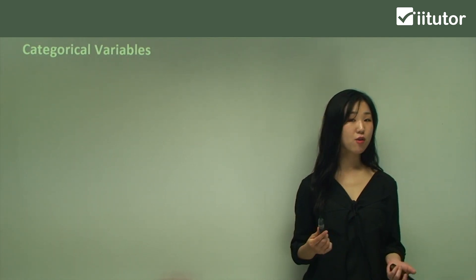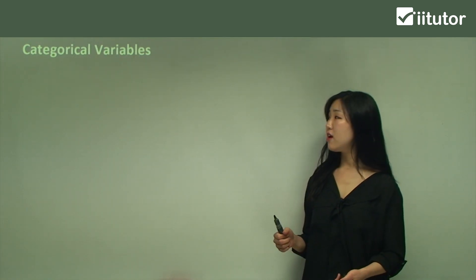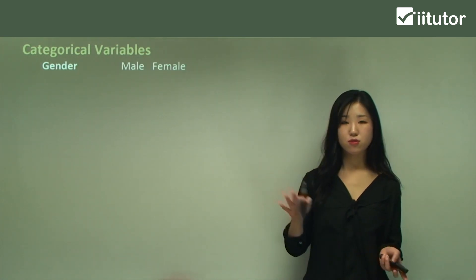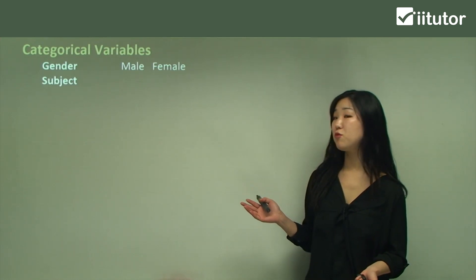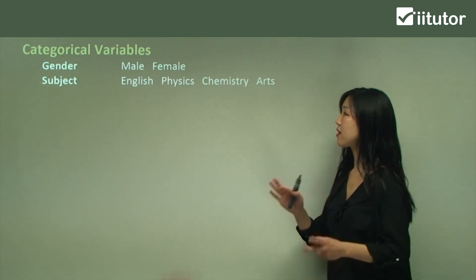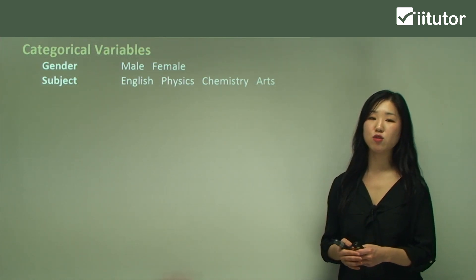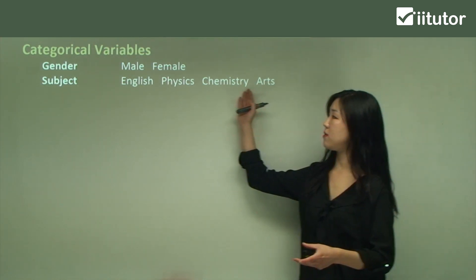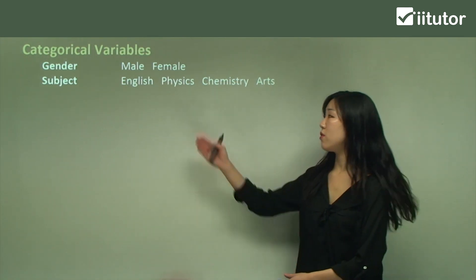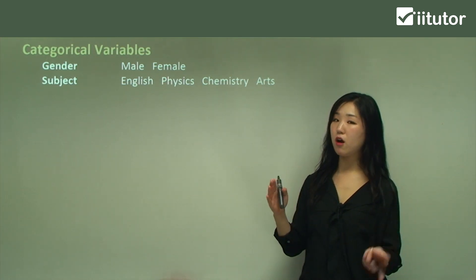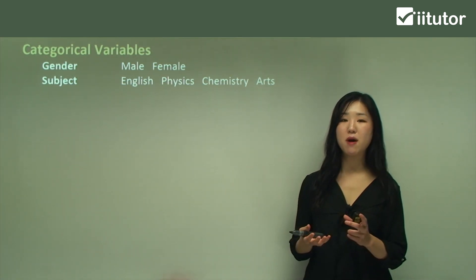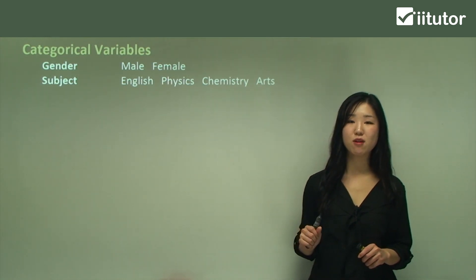The first one is categorical variables. For example, it could be gender, where it's male and female — two categories — or it could be subject, like English, physics, chemistry, or arts. These are categorical variables where we group items into a particular category, like subject or gender. That's categorical variables.